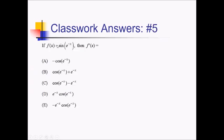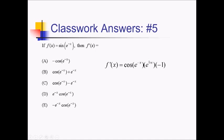To take the derivative of sine of e to the negative x, I'm going to need a chain rule. The outer function is sine of something, so the derivative is cosine of something — cosine of e to the negative x. Now multiply by the derivative of e to the negative x: that's e to the negative x, but then multiply by the derivative of negative x, which is negative 1. When the dust settles, we've got negative e to the negative x times cosine of e to the negative x — answer choice E.